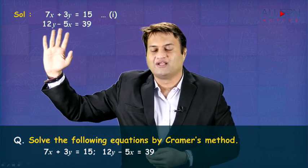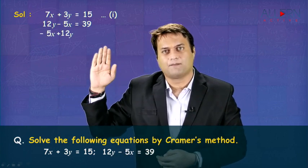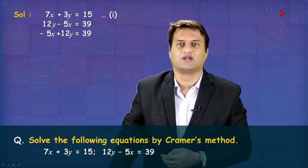So how do we write the left hand side here? Because you are not changing the side, you are just rearranging it. So do not change the sign. The sign will remain the same, you are just rearranging it. So what we write this as? It will be like minus 5x plus 12y is equal to 39.